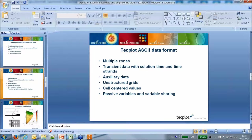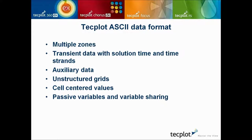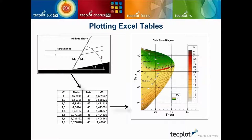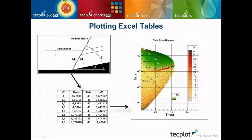Now we'll see how to plot an Excel table with a simple example — an oblique shock case. An incoming flow at Mach 1 (supersonic) is deviated by angle theta, forming a shock at angle beta, producing Mach 2 after the shock. For each theta, you can have two values of beta: a weak shock where M2 is still supersonic, or a strong shock where M2 is subsonic.